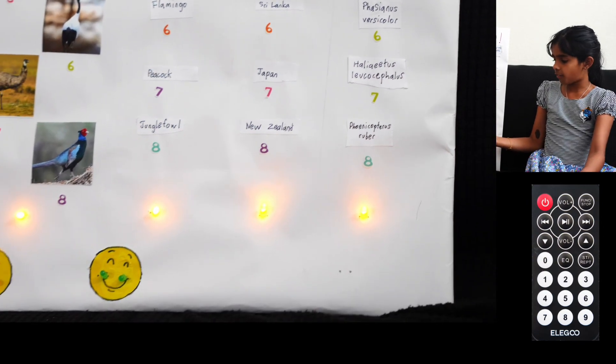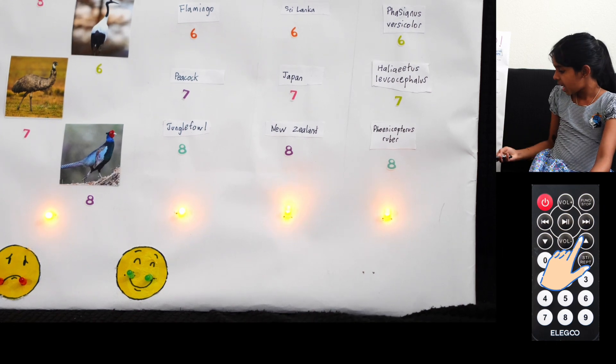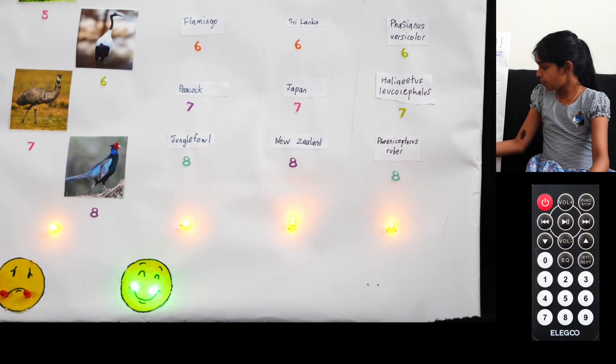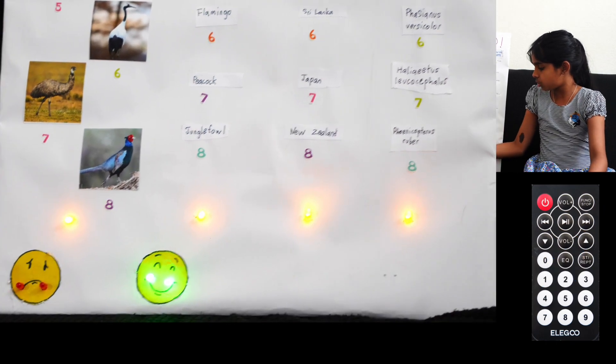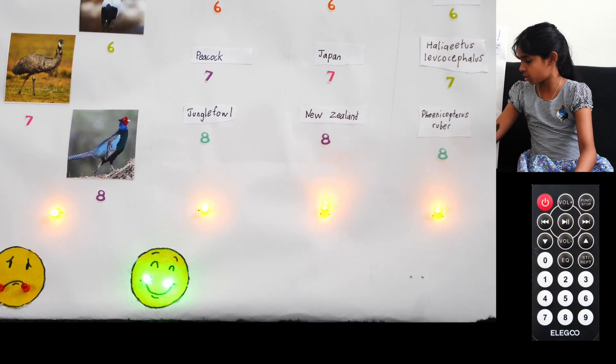So now to see if I'm correct, I have to press this arrow that's pointing up on the remote. And finally, I am correct because these two green lights are on. If I'm not correct, then these two red lights will turn on.